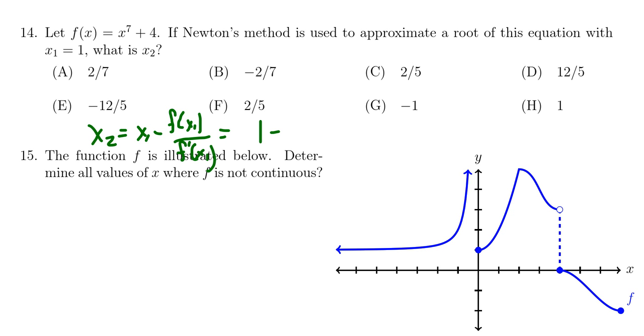So x1, of course, is just 1. So if we plug 1 into the function, we're going to get 1 to the 7th plus 4, which, of course, 1 to the 7th is just 1. So we get 1 plus 4, which is going to be 5.